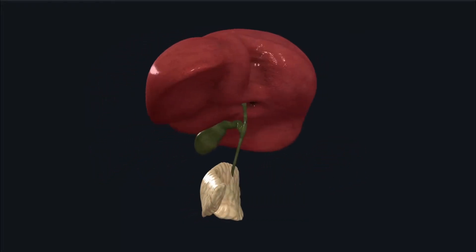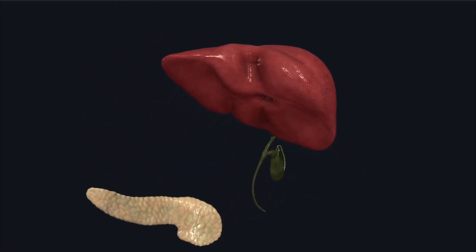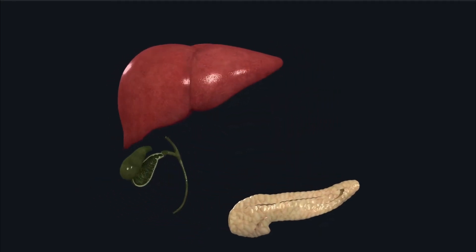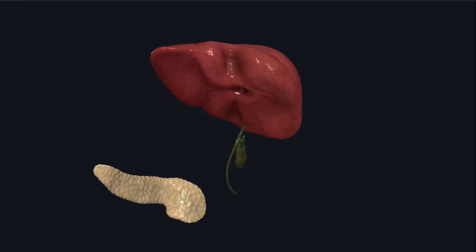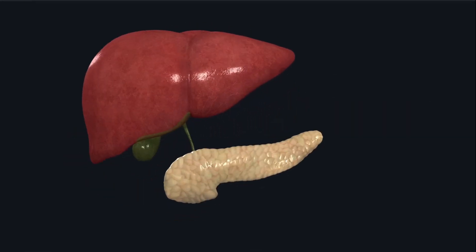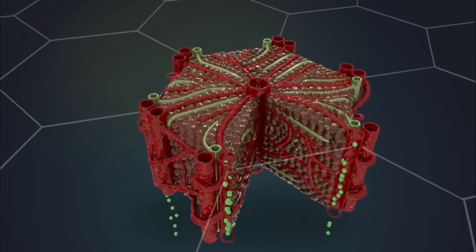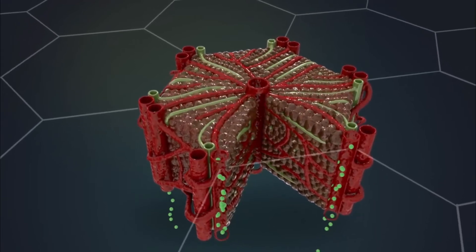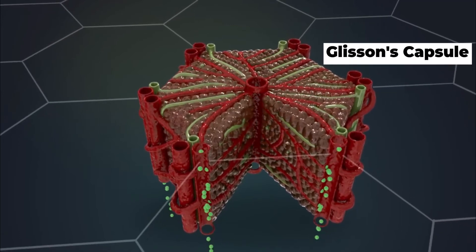The liver happens to be the largest gland in our body, weighing around 1.2 to 1.5 kg. It is divided into four lobes based on its external appearance: the left, right, caudate, and the quadrate lobes. The liver is also divided into eight segments, numbered one to eight. The functional and structural unit of the liver is a hepatic lobule, and each hepatic lobule is surrounded by a connective tissue sheath known as Glisson's capsule.